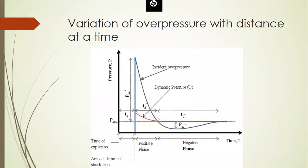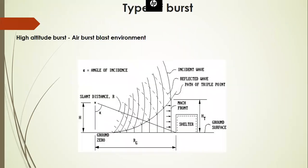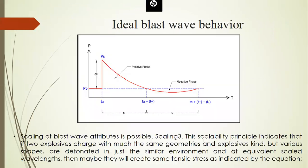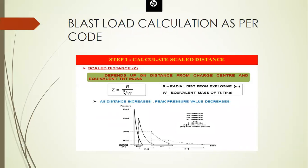Dynamic pressure is a sudden pressure with less intensity. Incident over pressure is the major wave that acts on the structure. Reflected pressure occurs when the blast wave hits the structure and a reaction wave is generated from the structure — based on Newton's third law of action and reaction.